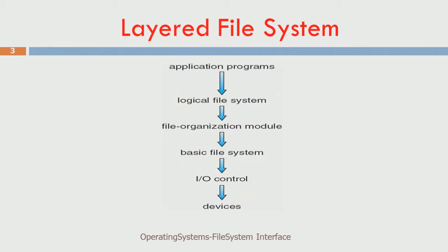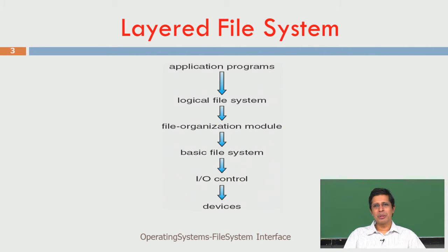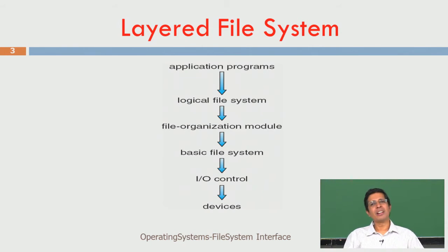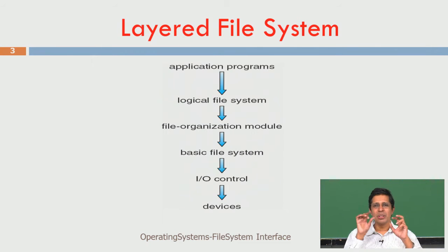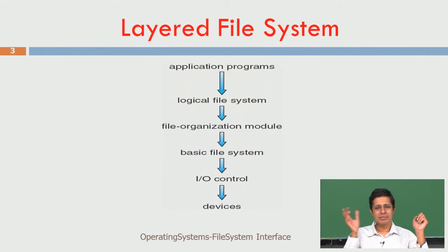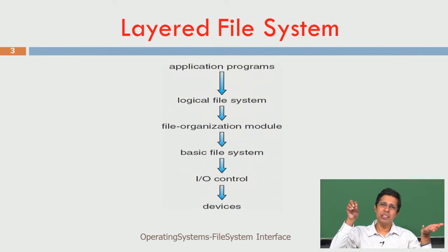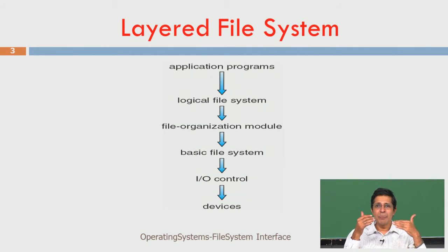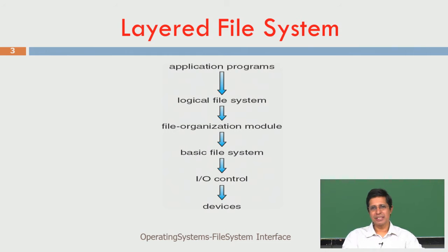The file system is layered. An application program that wants to access a file basically sees a logical file system. The logical file system means I see 'hello_world.c' - I do not really care whether it is stored on a USB disk, a CD, tape, or floppy. As an application program I see a file as a name, 'hello_world.c' sitting in some directory. The file system part of the operating system hides the physical storage from me.